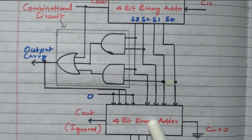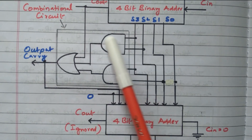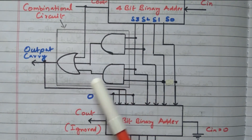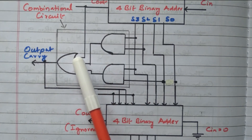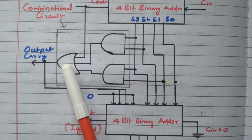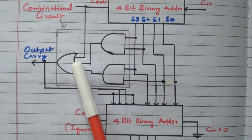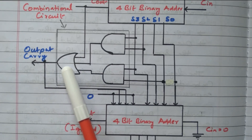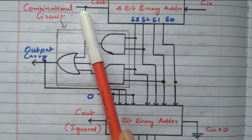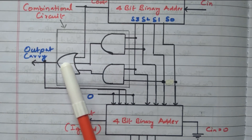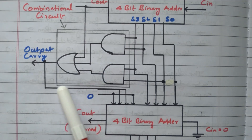This one more BCD adder is available. This is the logic circuit to detect whether the decimal number is greater than nine. Here, one OR gate is available. The C out is given here. So if C out is high, the OR gate output will be high — because for an OR gate, if any one input is high, the output is also high.